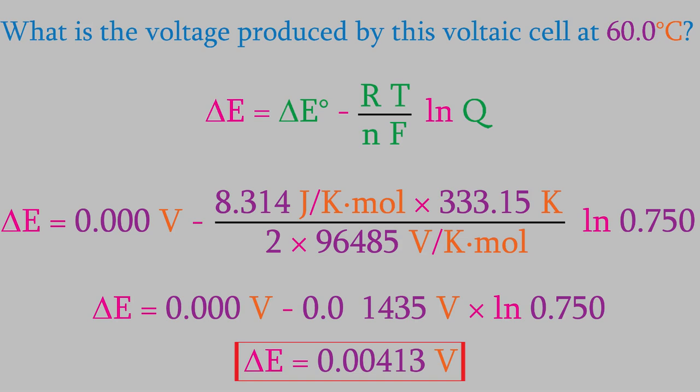As you can see, that's a really small voltage. But that makes sense, because the two electrodes are both made of the same metal, so we don't expect a very large current.